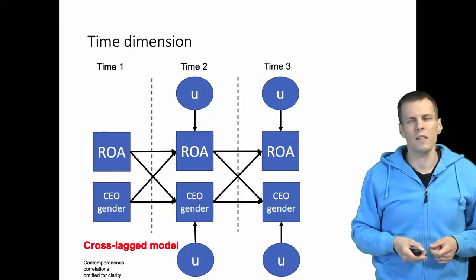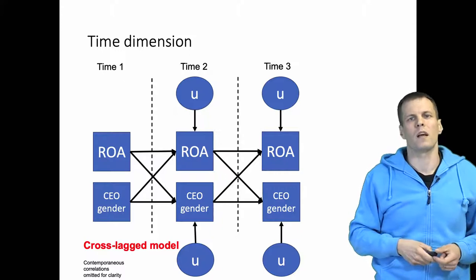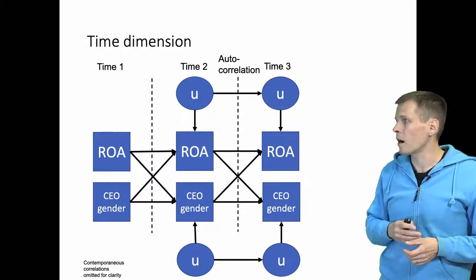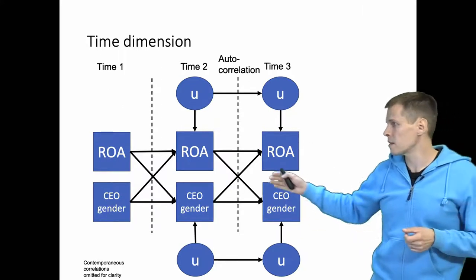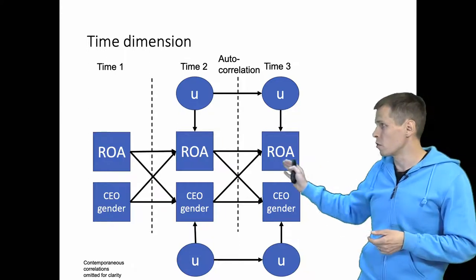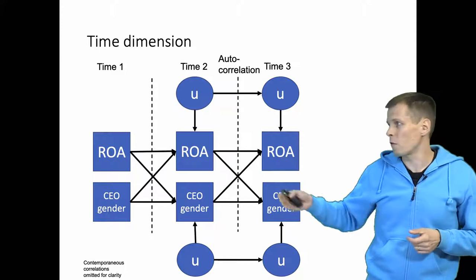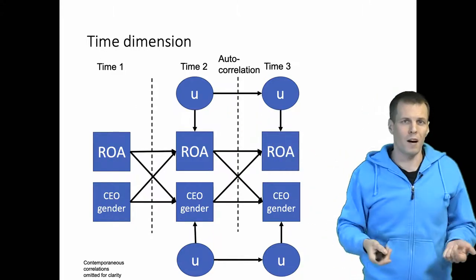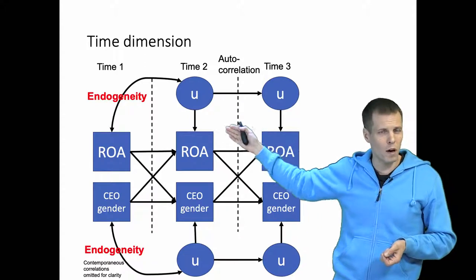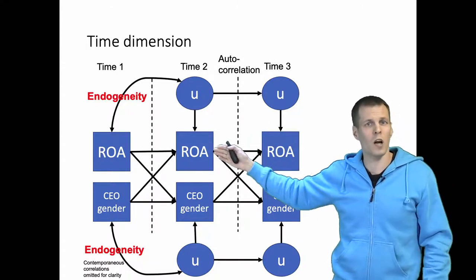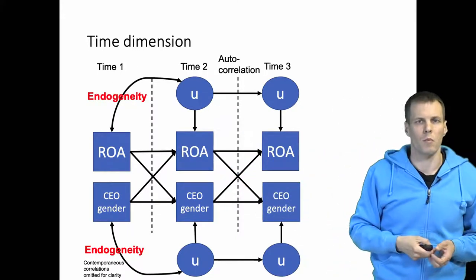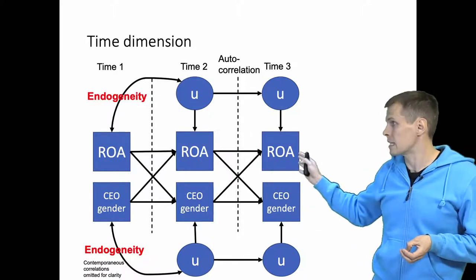But if we have these unmodeled causes of ROA, how realistic is it to assume they are not correlated? Not very realistic. If we allow a correlation here, this would be identified because we could use econometric techniques and ROA and CEO gender from the first time point could be used as instrumental variables for future values. But if we think that unmodeled causes correlate over time, we would also logically have to add arrows to the model — whatever is causing ROA at time 1, if it persists, it also causes ROA at time 2. So time 1 and time 2 error terms would be correlated, and that's an endogeneity problem we really can't deal with using just the data we have here.